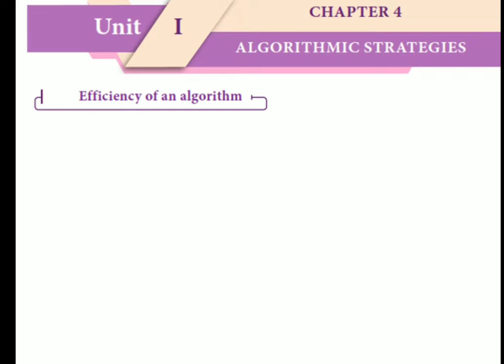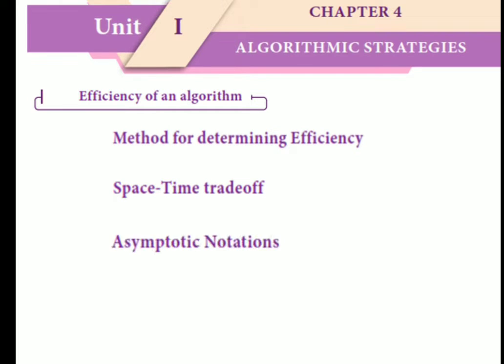Methods of determining efficiency of an algorithm include space-time trade-off, asymptotic notation, and best, worst, and average case analysis.